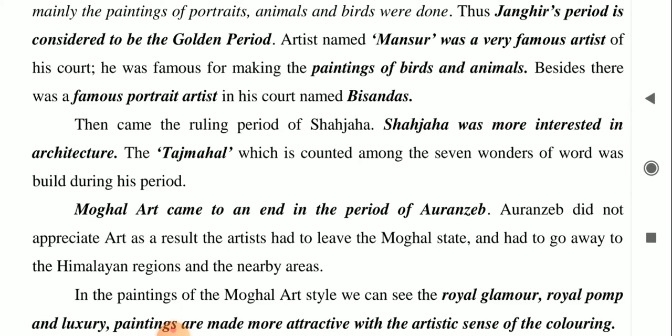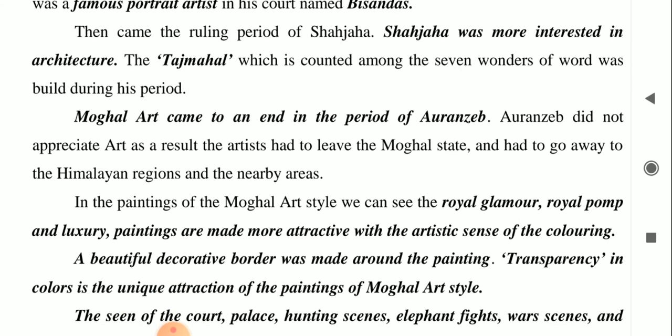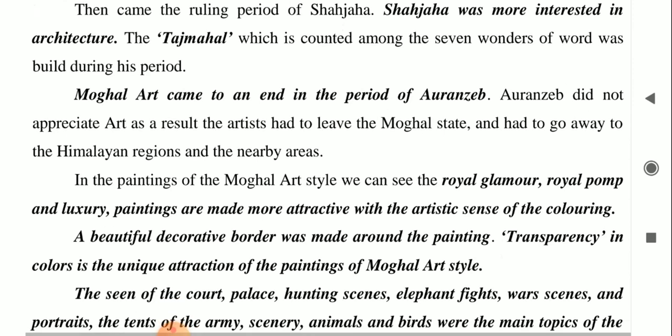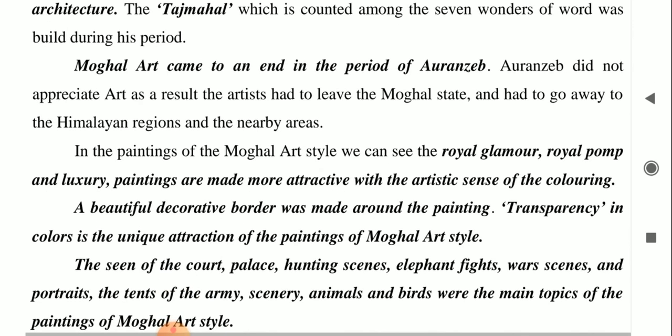Then came the ruling period of Shah Jahan. Shah Jahan was not interested in painting; he was more interested in architecture. The Taj Mahal, counted among the seven wonders of the world, was built during his period. After Shah Jahan came Aurangzeb, and Mughal art came to an end in the period of Aurangzeb. Aurangzeb was not at all interested in any type of art, and that is why all types of art stopped during his period.